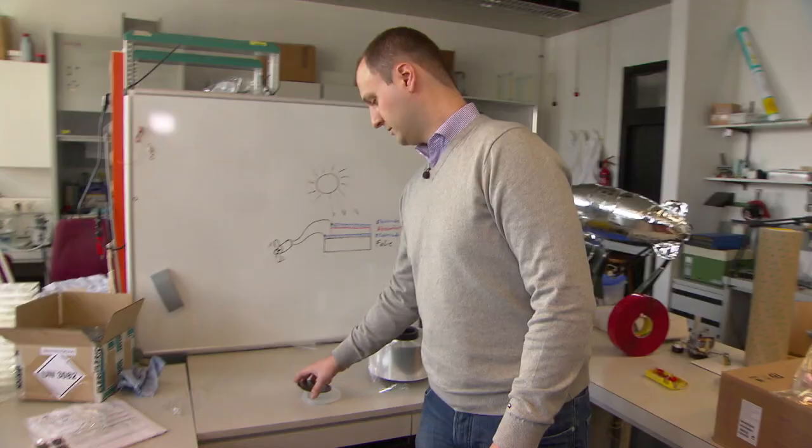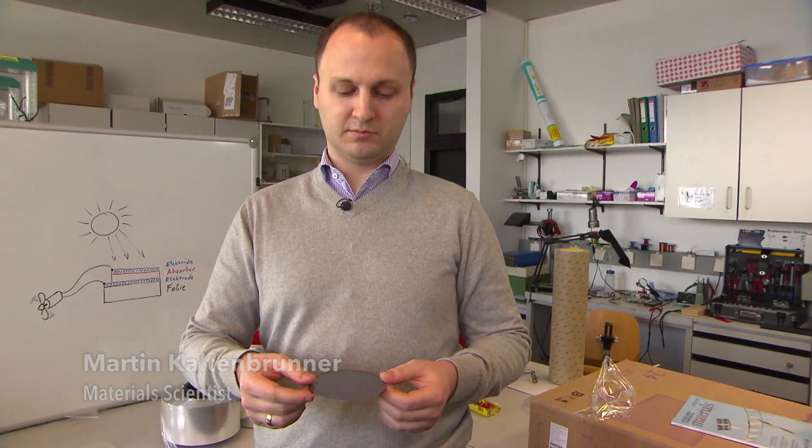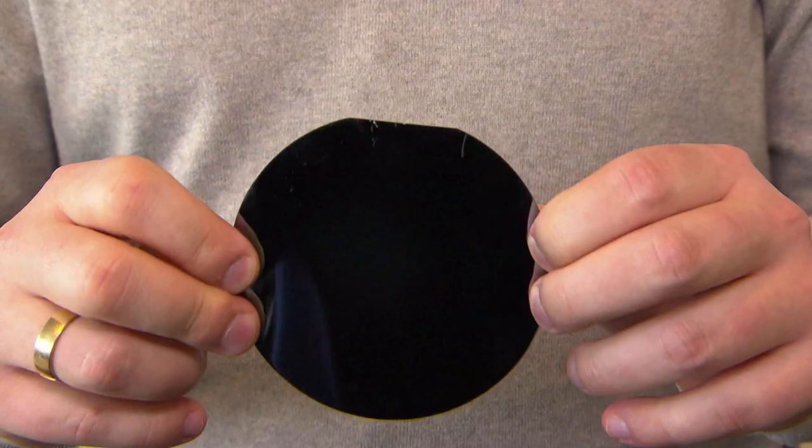Conventional solar cells are made of silicon. This is the raw material, a silicon wafer. You can see it's quite thin, but not very flexible. I can't bend it. If I were to try, the wafer would break.